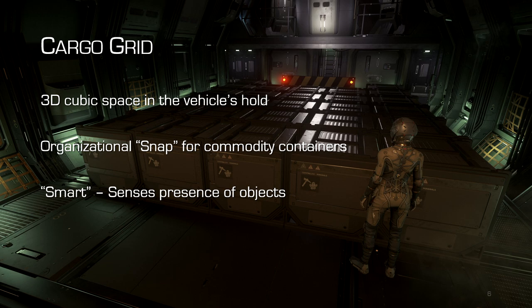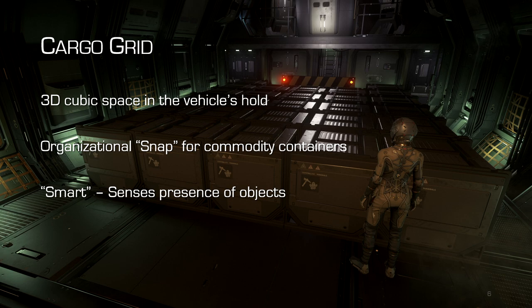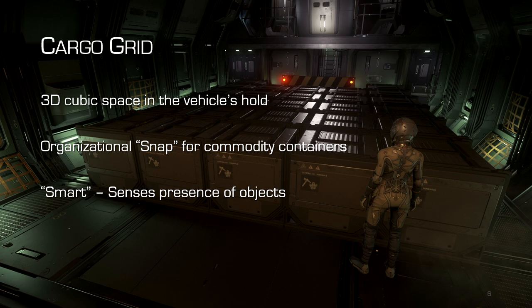There is an organizational snap on that three-dimensional grid for standard commodity containers. It is a smart system, so if you put something else into the cargo area where the grid is, the grid will actually know it's there and subtract the cube space of that object from the rest of the grid. That means it cannot be used for commodity containers — for example, where you've tractor-beamed in some salvage, like a gun from a derelict ship dropped on the floor. That space is no longer usable because there's an object there.